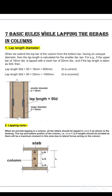Rule 2 is the lapping zone. When we provide lapping in a column, all rebar should be lapped in Zone B as shown in the figure. The top and bottom portions of the column, that is Zone A with L/4 length, should be avoided, as there will be maximum moment in this zone due to lateral forces acting on the columns. You can clearly see the lapping length and how to lap the reinforcement in a column in this picture.